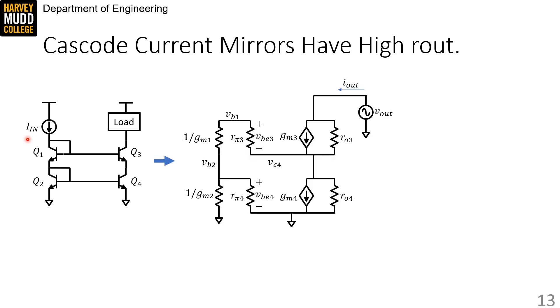Here's a complicated looking small signal model, where I've just substituted our hybrid pi model for the large signal circuit. Note that IIN becomes an open circuit here. Note also that the diode connected devices have turned into 1 over GM resistors. And note finally that this is a mess. It's kind of hard to interpret.